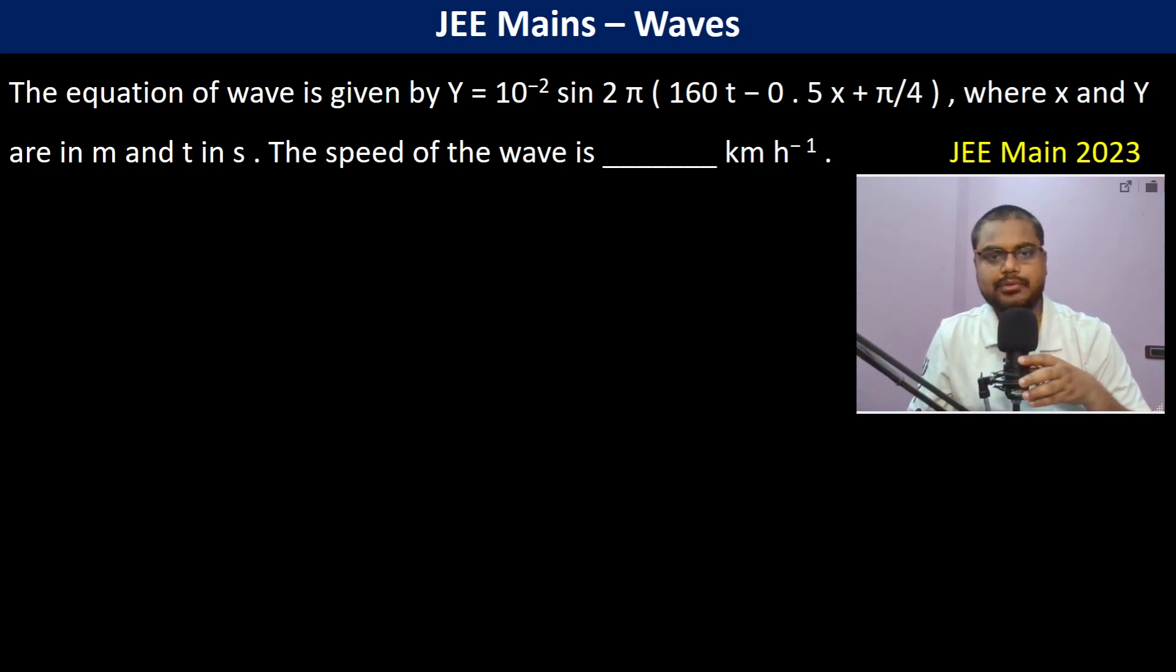The equation of the wave is given by Y = 10^-2 sin 2π(160t - 0.5x + π/4), where x and Y are in meters and time is in seconds. The speed of the wave is...